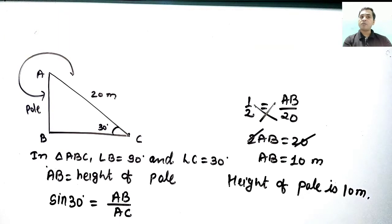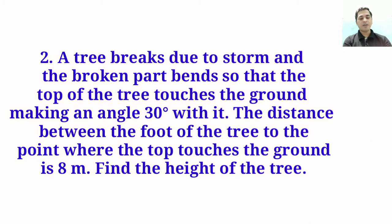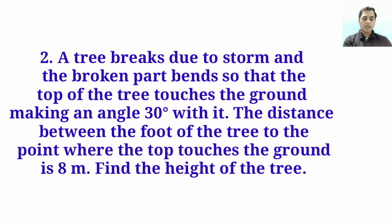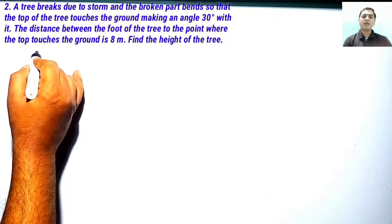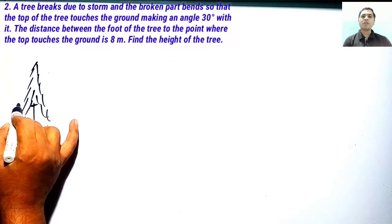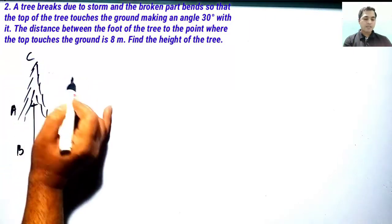Moving to the next question. A tree breaks due to a storm and the broken part bends so that the top of the tree touches the ground making an angle of 30 degrees. The distance between the foot of the tree and the point where the top touches the ground is 8 meters. Find the height of the tree. Let us draw a diagram: point B is the base, A is where the tree breaks, and C is where the top touches the ground. Total height of the tree is BC.